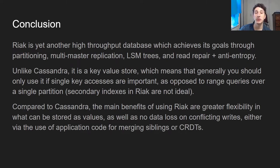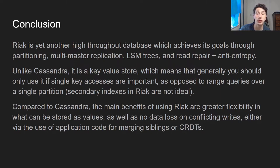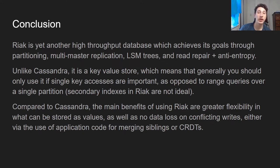In conclusion, Riak is another super high throughput database, however it's only really high throughput for single key reads and writes. Things like range scans over a clustering key, as would work in Cassandra, don't really work that way. That said, if you look at the internals of Riak and Cassandra, they look very similar — both use the same type of partitioning via consistent hashing on a key, the same type of multi-master replication, LSM trees, and read repair and entropy. But unlike Cassandra, Riak gives you more flexibility in how you store your data because a value can literally be anything, at the cost of making sorting within a partition much harder.